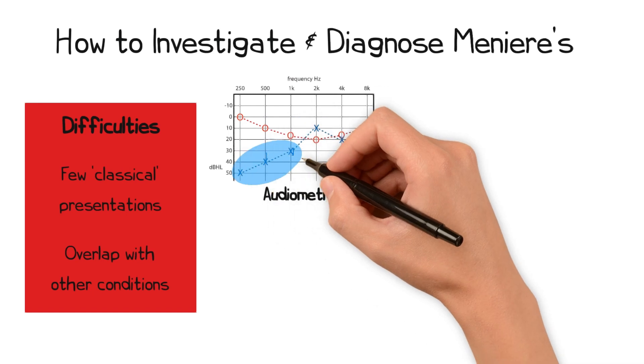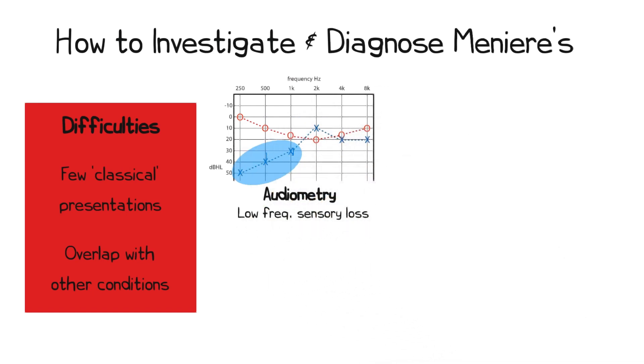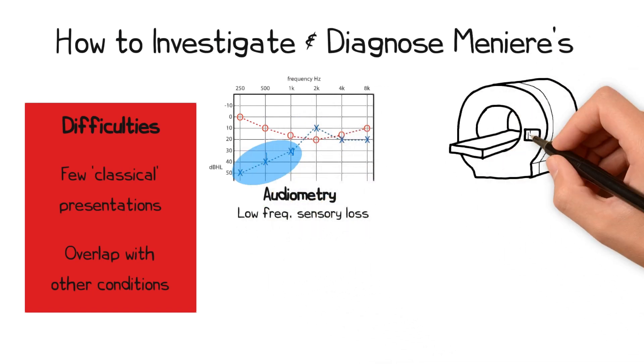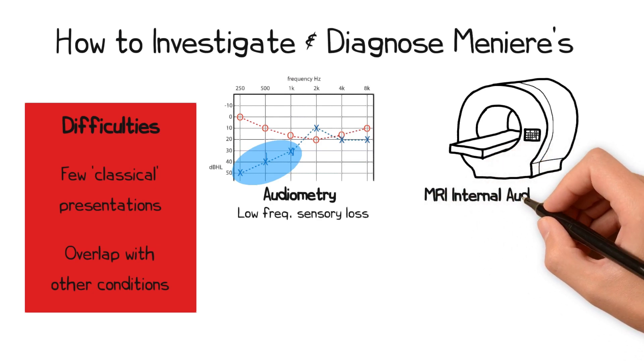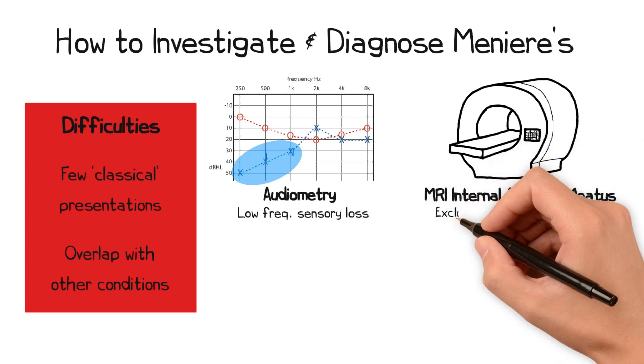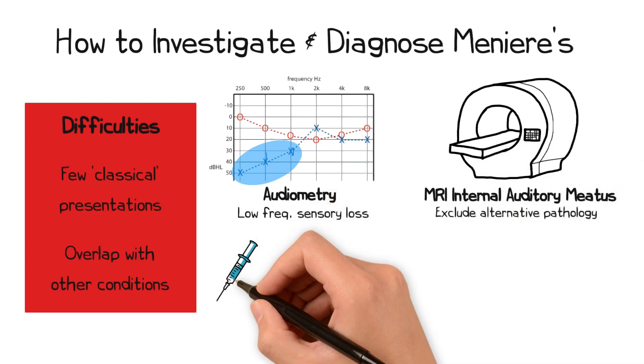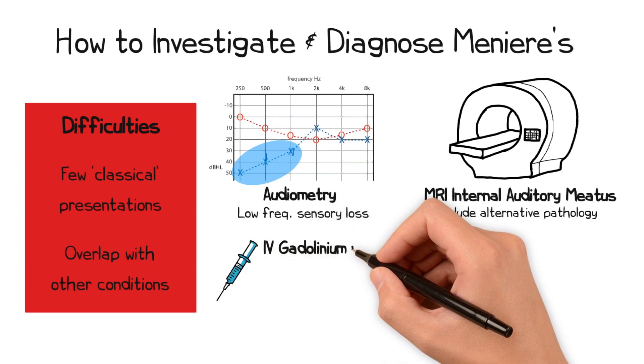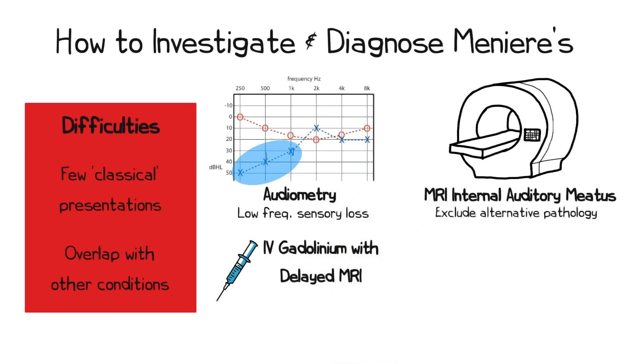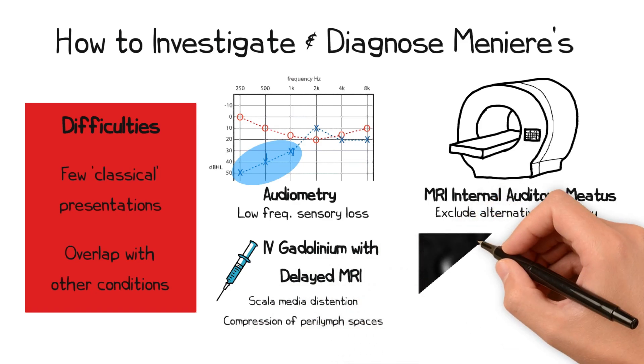Audiometry may reveal a sensory loss, which is typically in the lower frequencies. An MRI scan of the internal auditory meatus can be performed to rule out an alternative pathology. More recently, there is a specific protocol designed to identify cases of hydrops. This involves administration of IV gadolinium, followed by a delayed MRI to allow time for the gadolinium to penetrate the inner ear. This scan may demonstrate distension of the scala media and compression of the perilymph spaces.